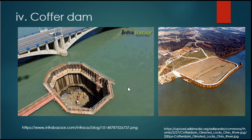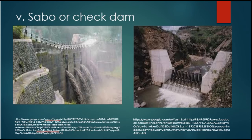The fourth type is the coffer dam. Coffer dams are used to divert water during construction. The fifth type is the sabot or check dam, and these are used to prevent erosion.